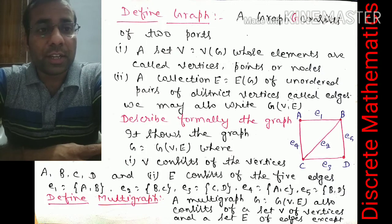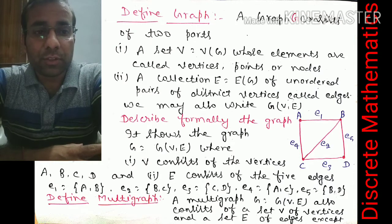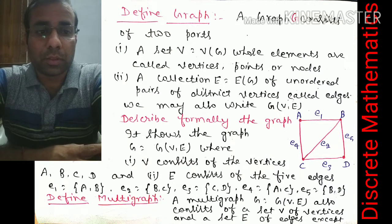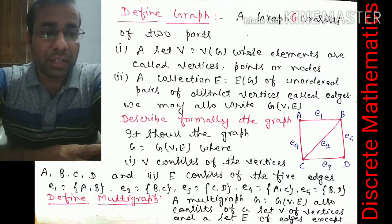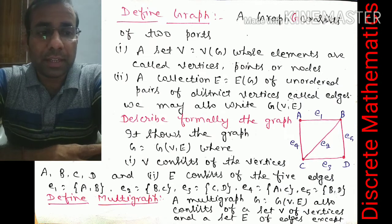First of all, we will define what a graph is. A graph G consists of two parts: first, a set V = V(G) whose elements are called vertices, points, or nodes; and second, a collection E = E(G) of unordered pairs of distinct vertices called edges.